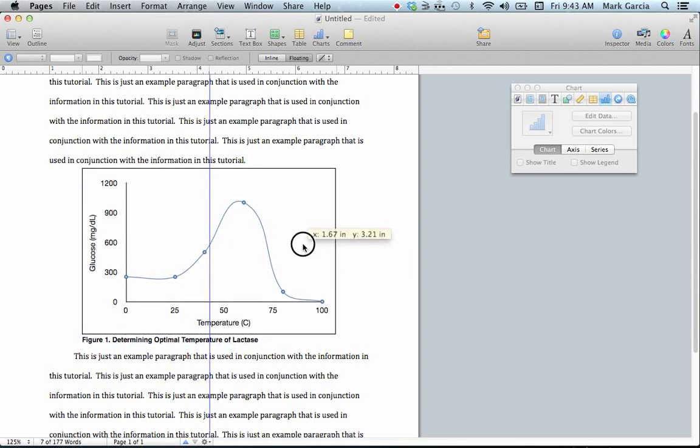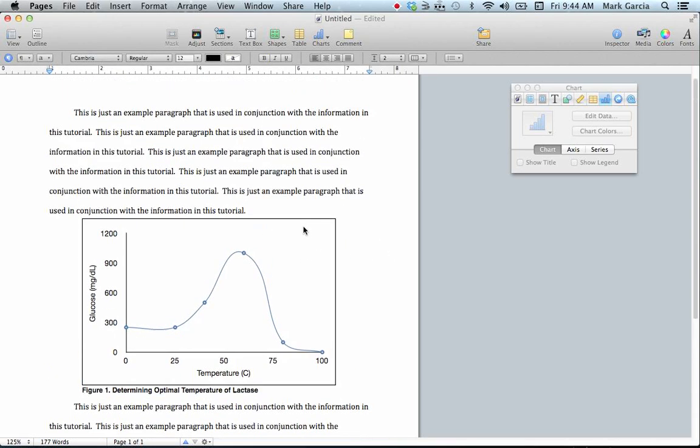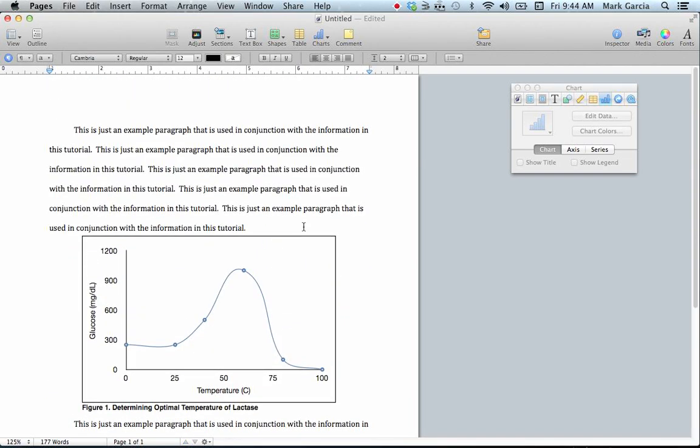So I've now taken a graph from Numbers, placed it in here, given it a border, and then added a legend, and I've grouped them all together so that they'll freely move through my document. So that's all there is to it.